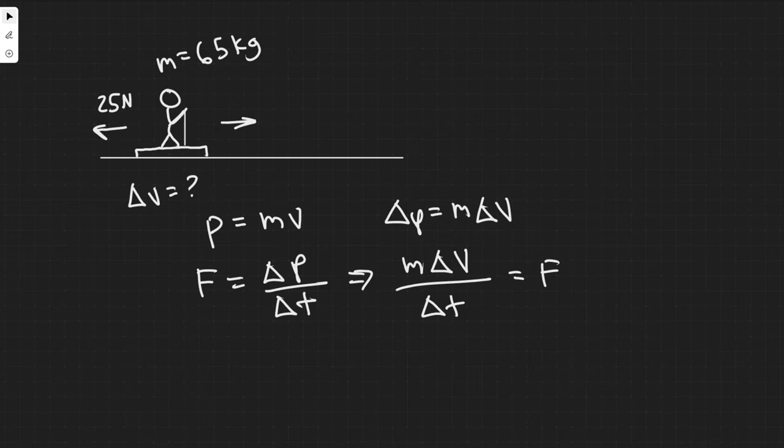Keep in mind we know all these values. We're solving for the change in velocity. We have the mass which is 65 kg. We have the change in time which they tell us is 15 seconds.